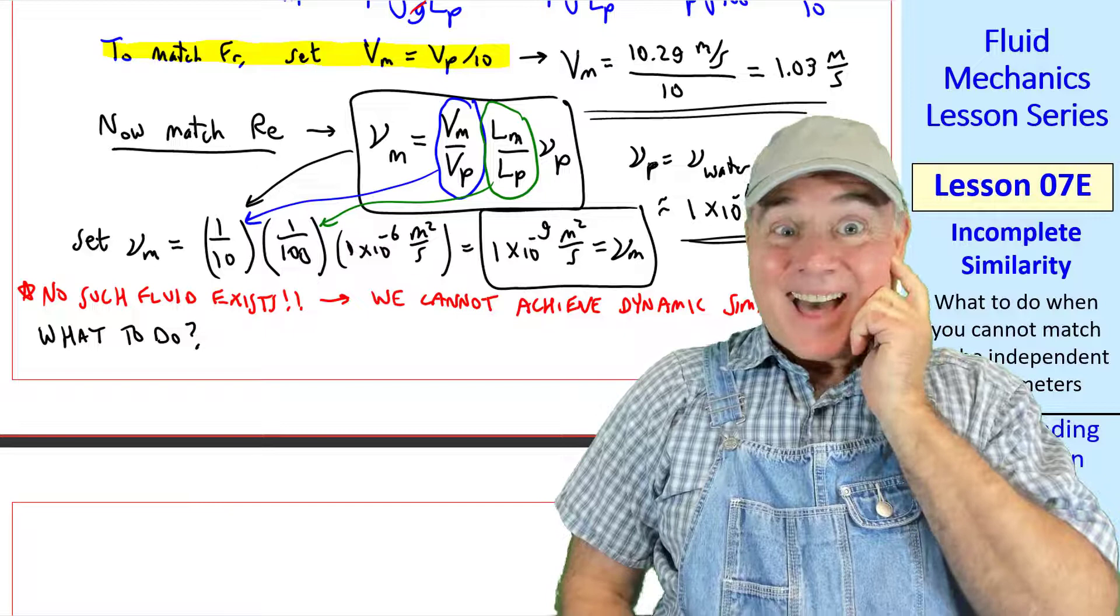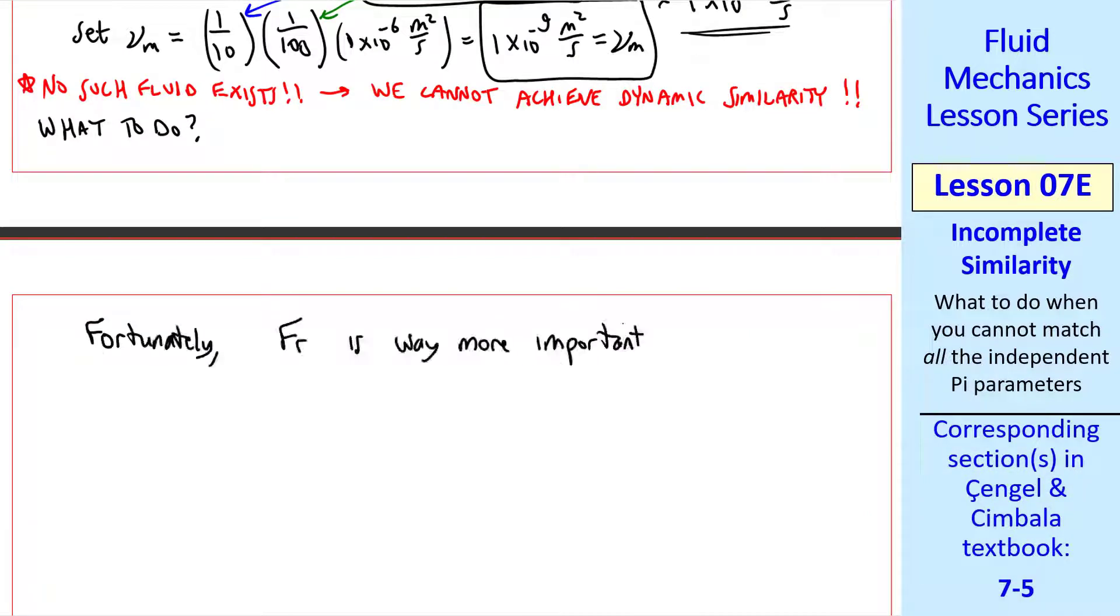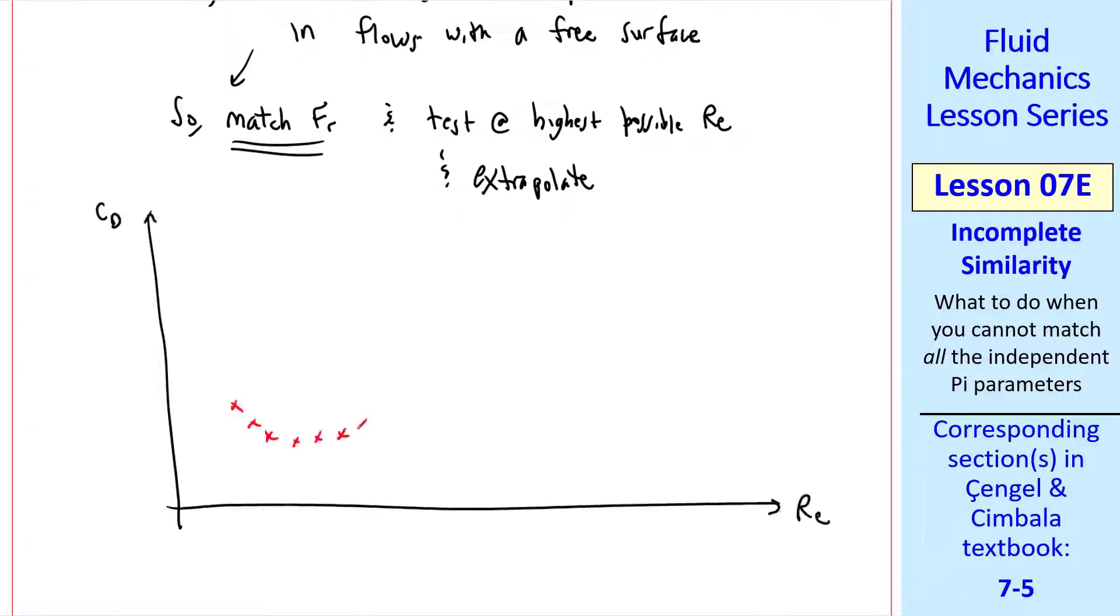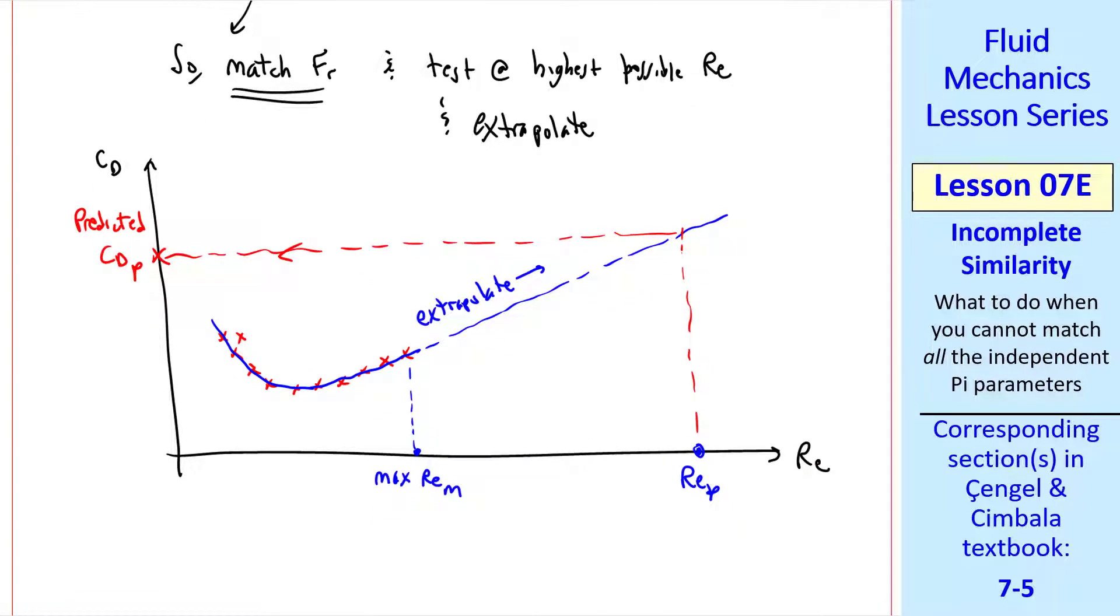What to do? Well, don't give up. It turns out, fortunately, Froude number is way more important than Reynolds number in flows with a free surface. So we match the Froude number and test at the highest possible Reynolds number and extrapolate. Again, we hope for a situation where at the correct Froude number, the data looks something like this, where this is the maximum achievable Reynolds number of the model. If this is the Reynolds number of the prototype, we must extrapolate CD of the prototype. As I said before, the problem is that we don't know for sure whether these data follow a straight line. The data might actually go up or veer down or reach a constant CD at some point. This is where experience comes in. Engineers who model ships in water channels know from experience how to extrapolate with reasonable accuracy. So incomplete similarity is not always a showstopper. It just makes our life more difficult.